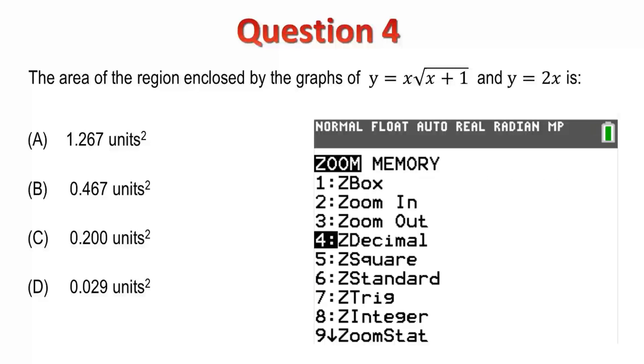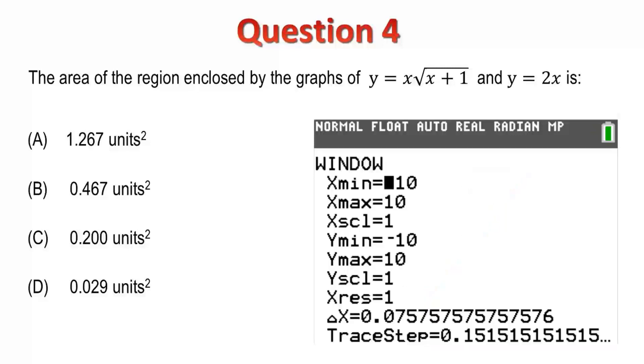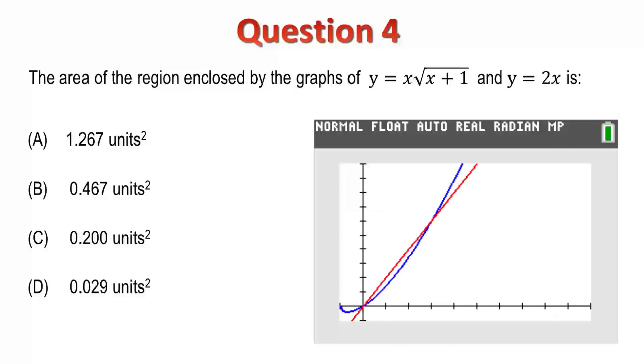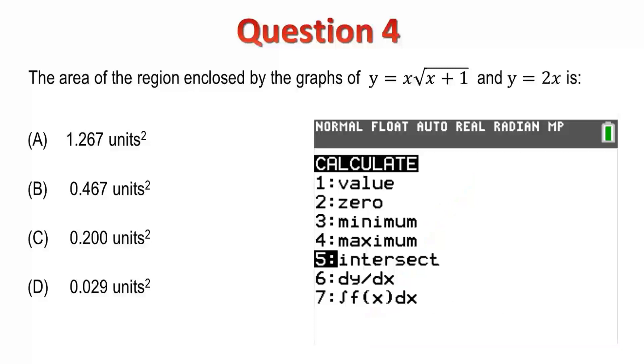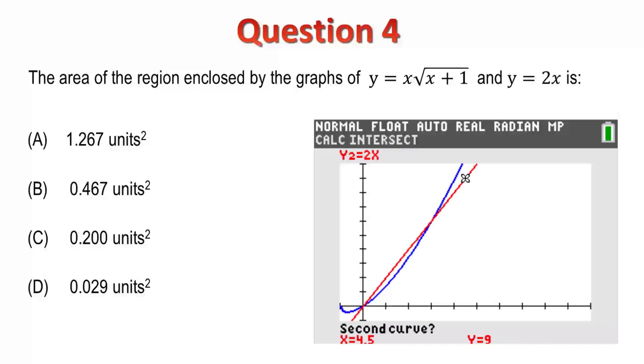I'll select Zoom Standard, and then adjust the window settings to get a better look. As expected, the graphs intersect at x equals 0. To locate the second point of intersection, use the Calculate menu by pressing Second Function and Trace. Select Intersect. Press Enter to select the first graph, and again to select the second. Move the cursor close to the point of intersection, and press Enter once more. We can see the two graphs intersect at x equals 3.